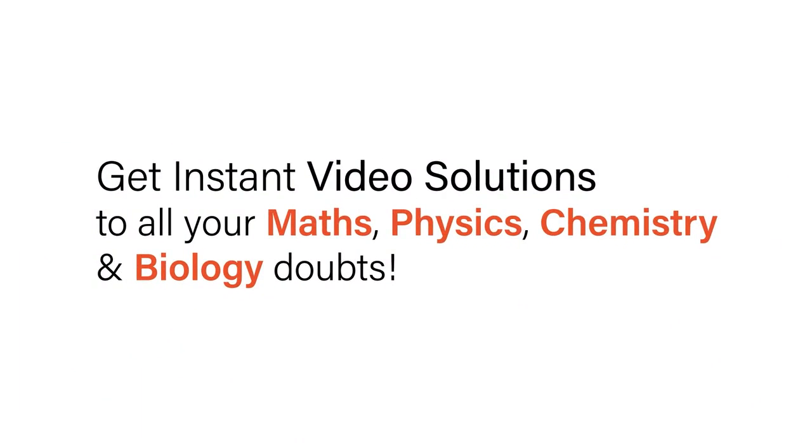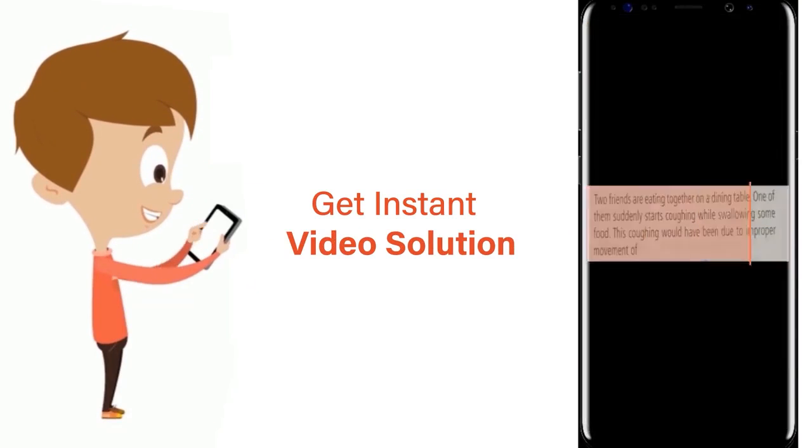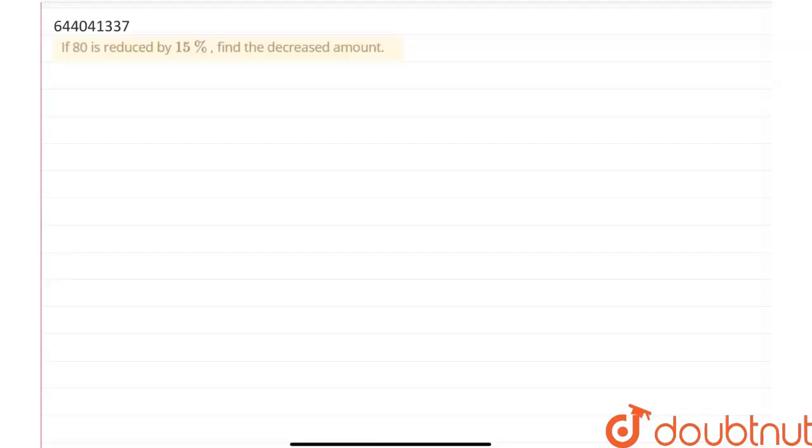With Doubtnut, get instant video solutions to all your maths, physics, chemistry, and biology doubts. Just click the image of the question, crop the question, and get instant video solution. Download Doubtnut app today. Hello everyone, the question says if 80 is increased by 15 percent, then we need to find the decreased amount.